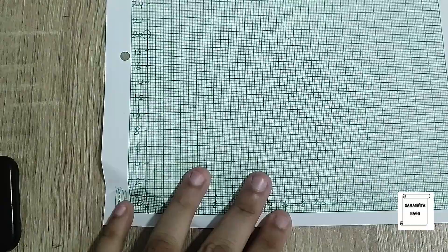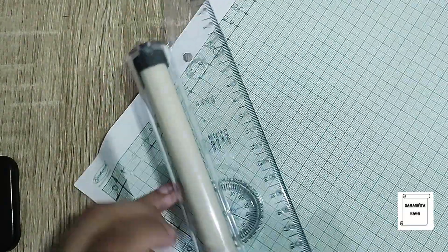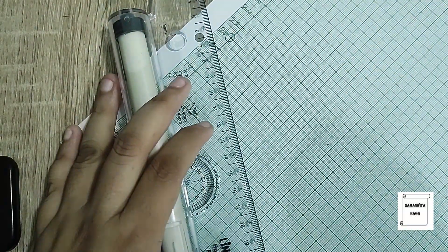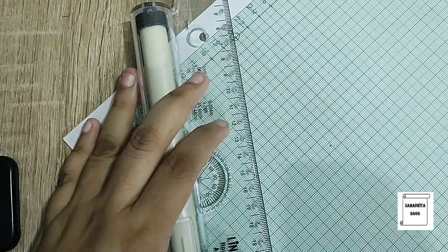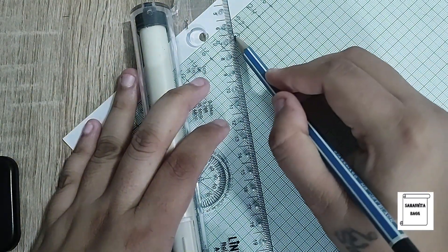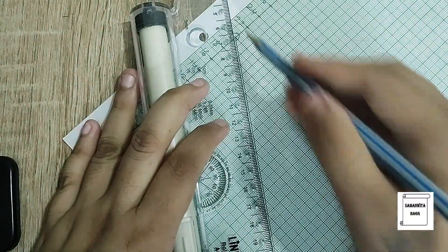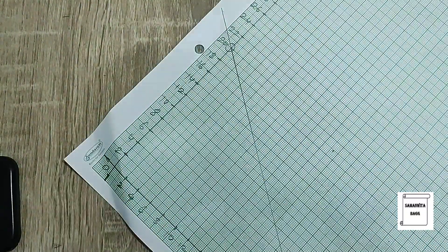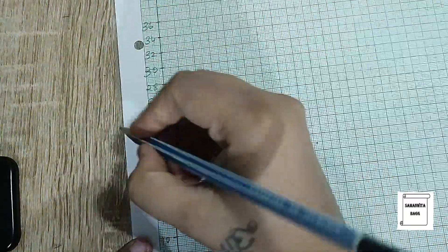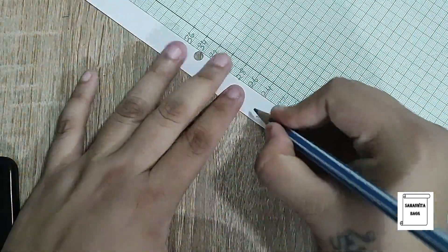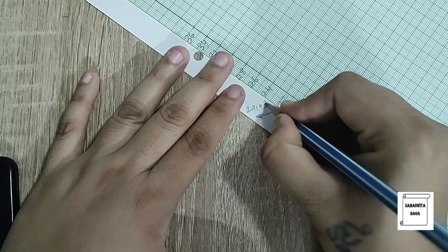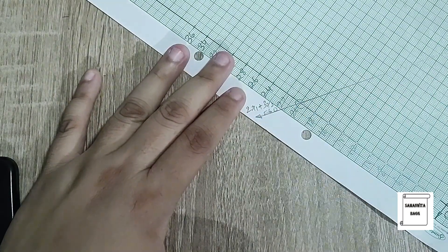Now I will join these two points. I will write the equation here: 2x₁ + 3x₂ = 60.